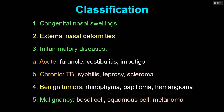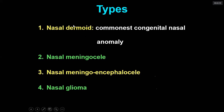It is always good to know all these diseases in detail, and at least try to know their basic principles. Congenital nasal swellings are of four types: nasal dermoid, nasal meningocele, nasal encephalocele, and nasal glioma. These are very similar but have many differences among them.